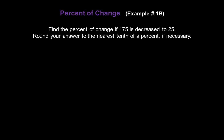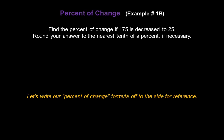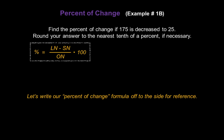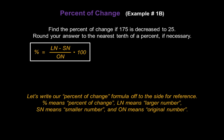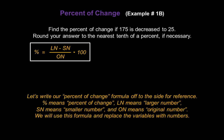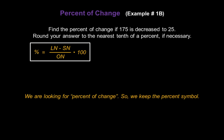Let's find the percent of change if 175 is decreased to 25, and again we'll round to the nearest tenth of a percent if necessary. I'll write our percent of change formula off to the side using the shorthand version: the percent symbol means percent of change, Ln means larger number, Sn means smaller number, and On means original number. We'll replace those variables with numbers from the problem and solve for what's missing. We're looking for percent of change, so I'll start the equation with percent equals.